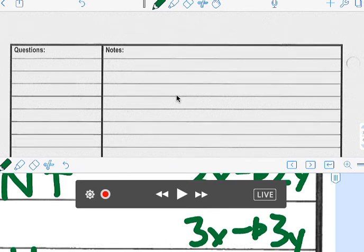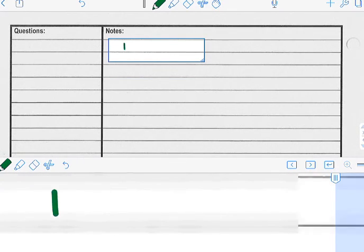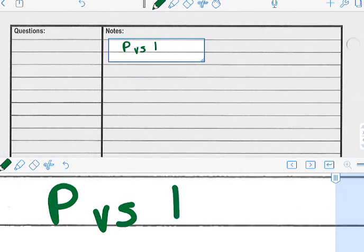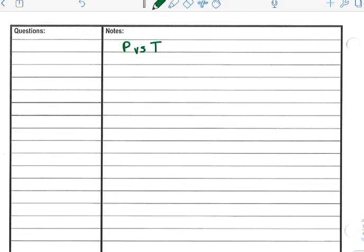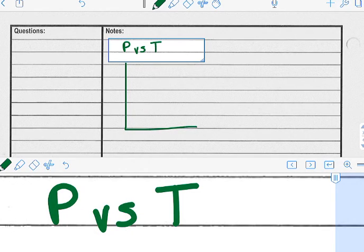Okay, so here we are. Temperature is the last one. Pressure versus temperature. Okay, so on this one, you had a flask and the flask had a little tube that was connected to the pressure sensor.